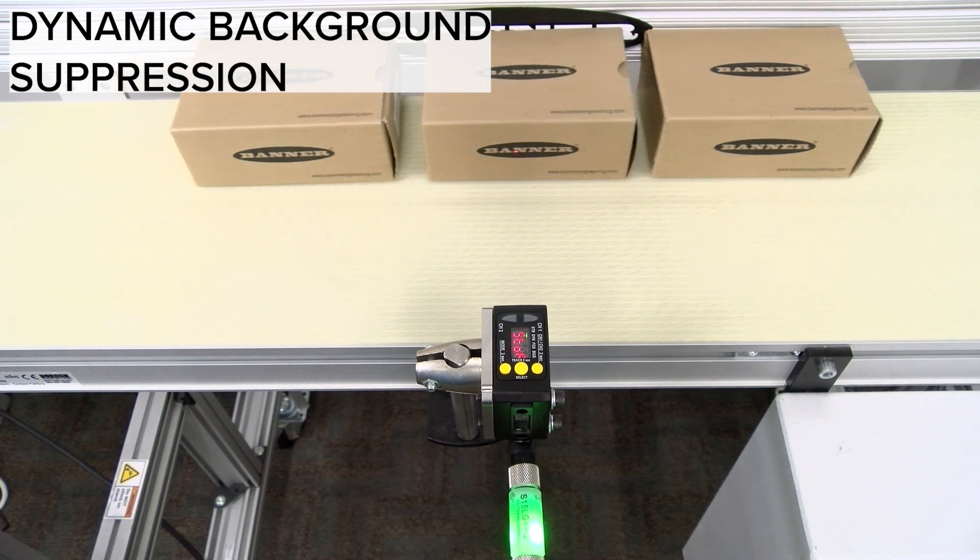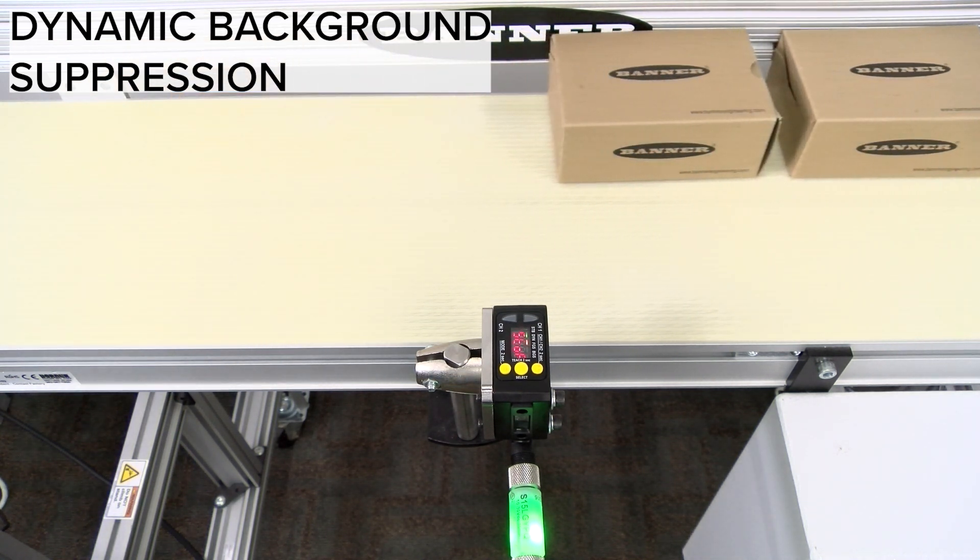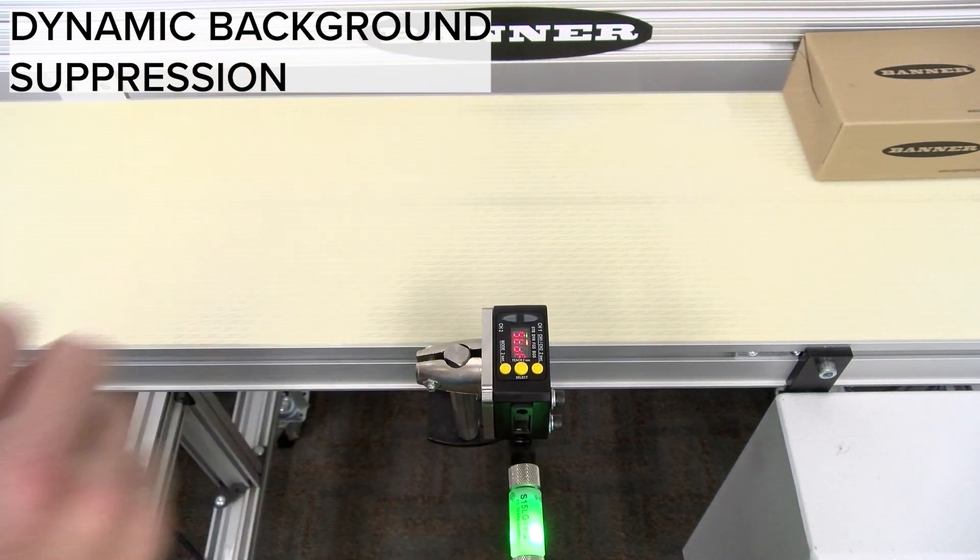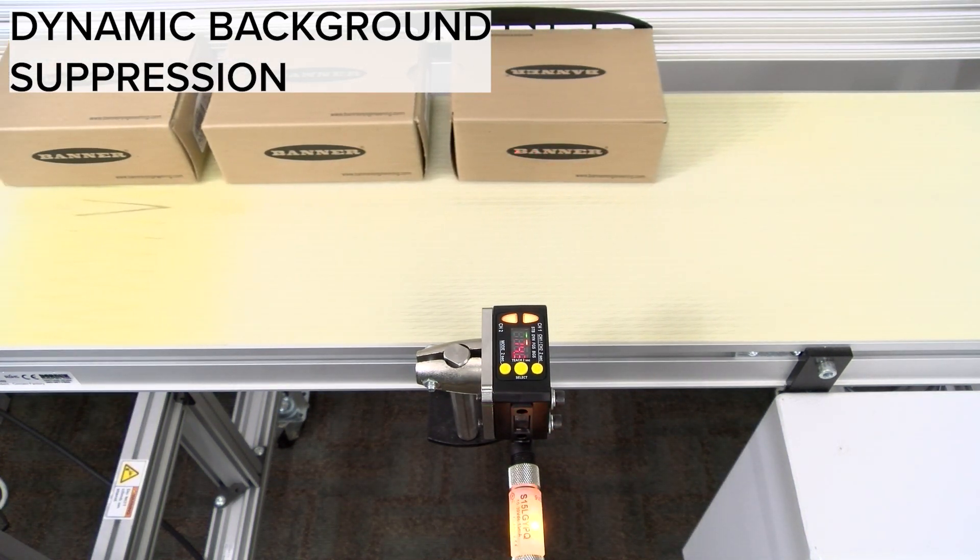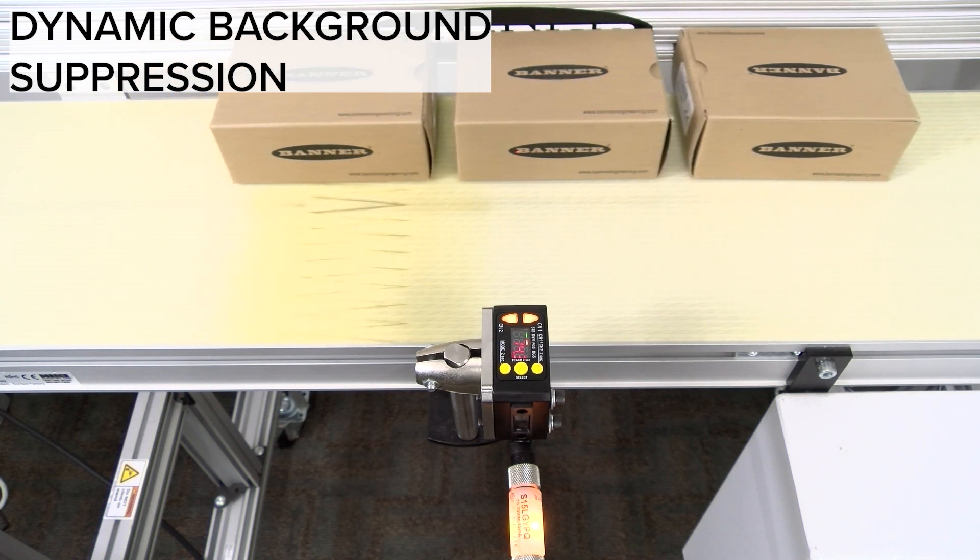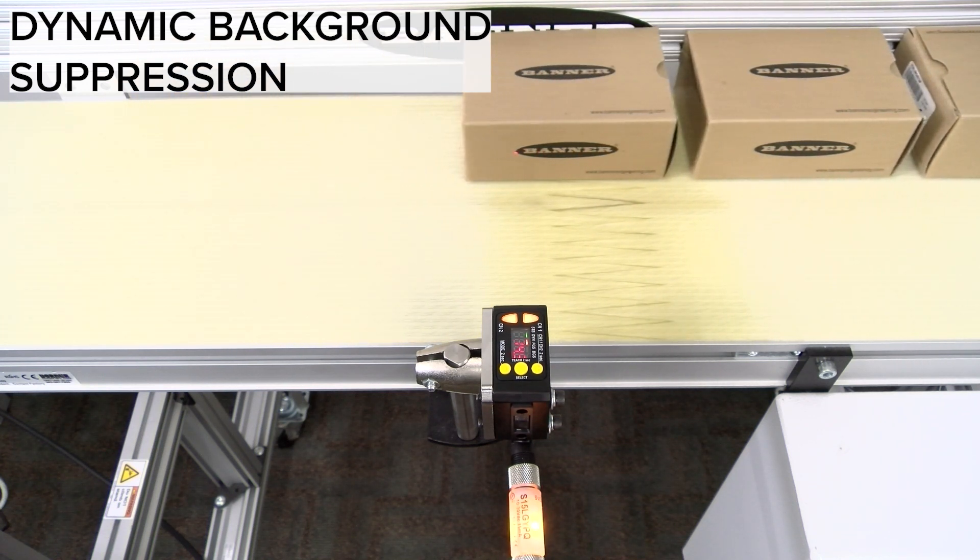Dynamic background suppression is recommended for applications where the machine or process cannot be stopped for teaching. Once samples are taught, a switch point will automatically be placed midway between the maximum and minimum sample distances. The sensor will now ignore the background and detect the object.